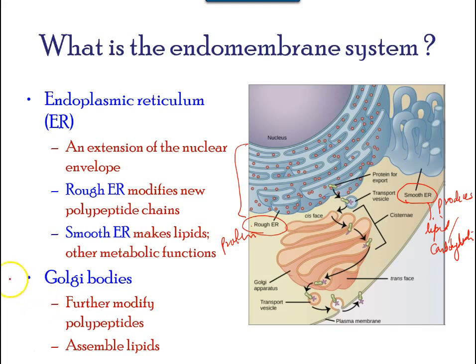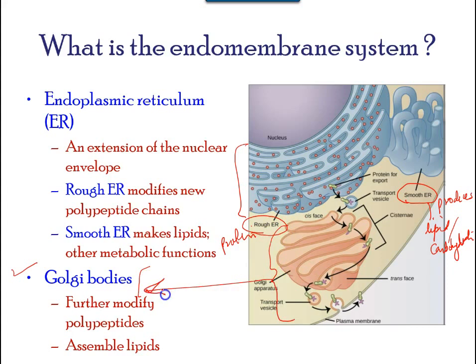The sorting, tagging, packaging, and distribution of lipids and proteins takes place in the Golgi apparatus, also called the Golgi bodies. These are stacks of flattened membrane sacs.